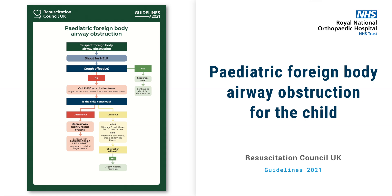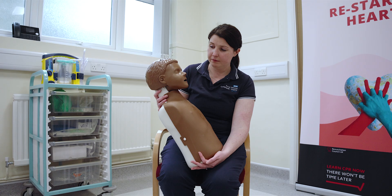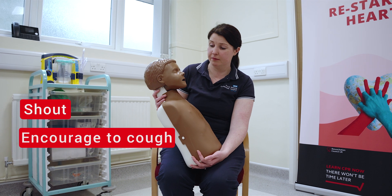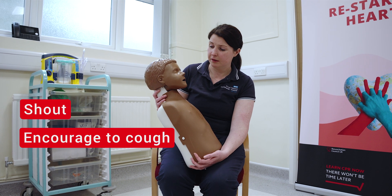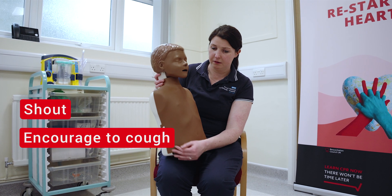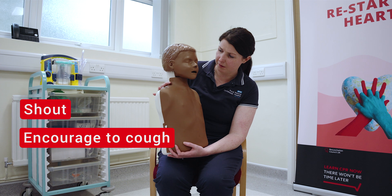Paediatric Foreign Body Airway Obstruction. If you suspect a child has a foreign body airway obstruction, first of all, shout for help. Encourage the patient to cough. If they can cough successfully, then check for deterioration.